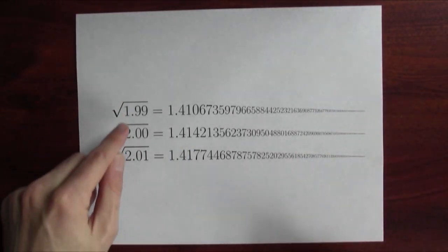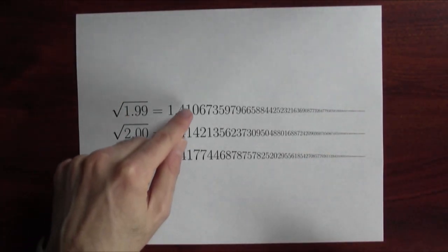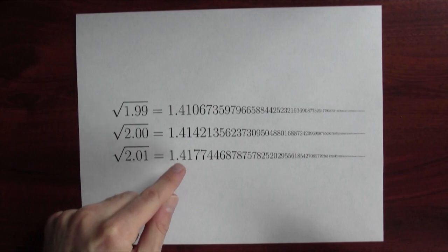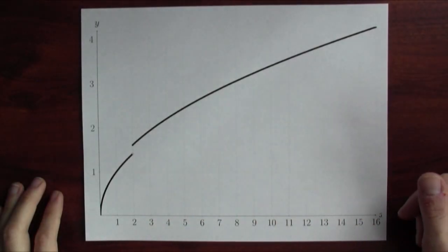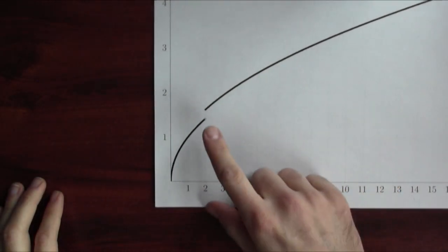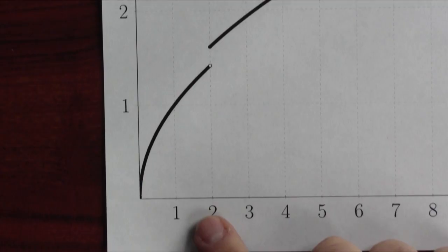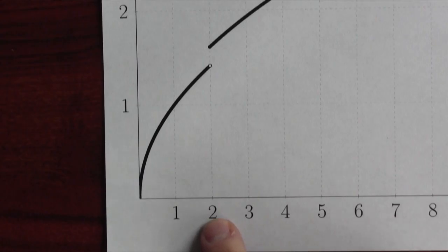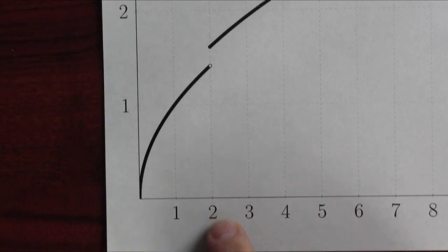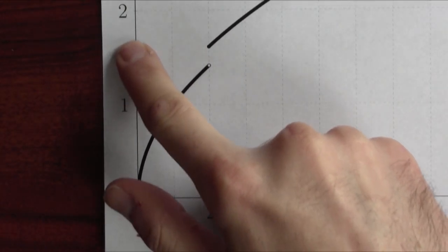The point here is that nearby inputs are producing nearby outputs. Let's try to see these numbers — what does the graph of the square root function look like? Is this the graph of the square root function? Take a look at what happens right here: nearby inputs are not being sent to nearby outputs. Inputs very close to 2, something a little less than 2 and something a little bigger than 2, are being sent to outputs that are quite far apart.